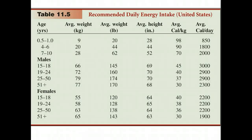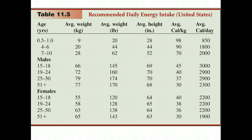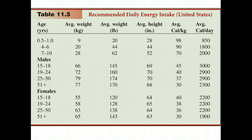Energy needs differ based on age, gender, and activity levels. Although women have a higher ratio of fat to muscle than men, they usually require fewer calories because they are smaller. Generally speaking, we need to burn 3,500 large calories to lose one pound. Our basal metabolic rate, BMR, is the energy required by a resting body. This rate is much lower than our average rate, but our systems continue to demand energy even when we sleep.